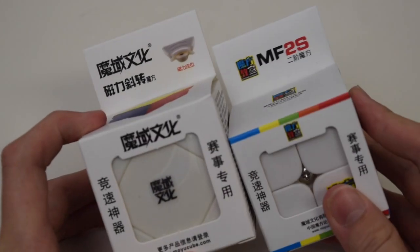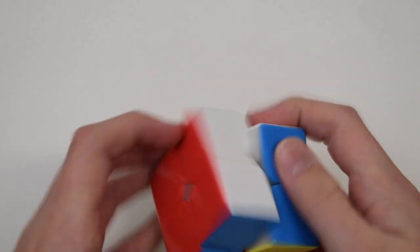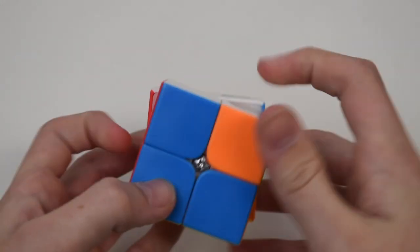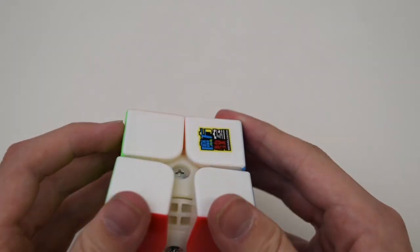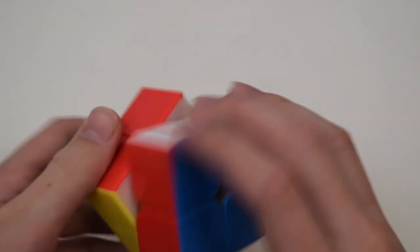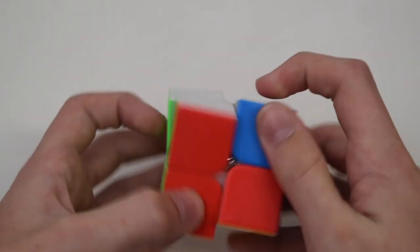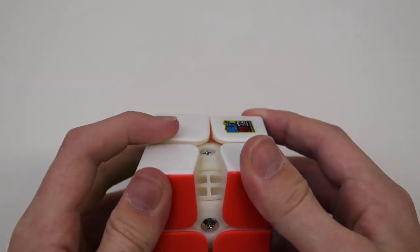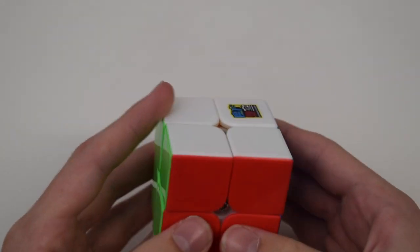Let's go ahead and get started with the 2x2. So straight out of the box, it's very smooth and very sandy. I'm actually really impressed with this cube, it has very good corner cutting and it seems to be very fast.